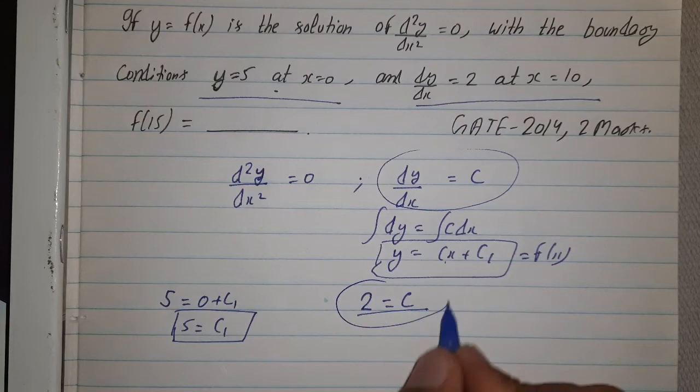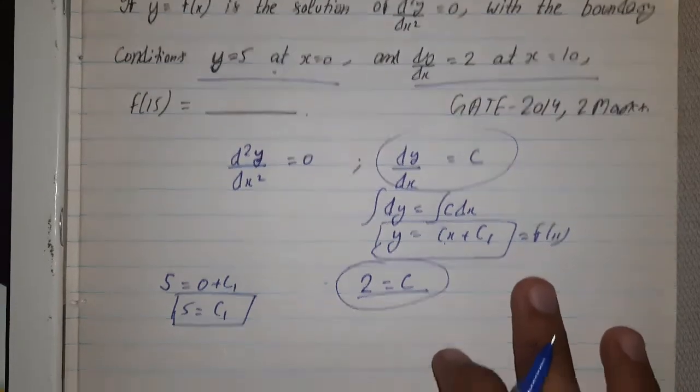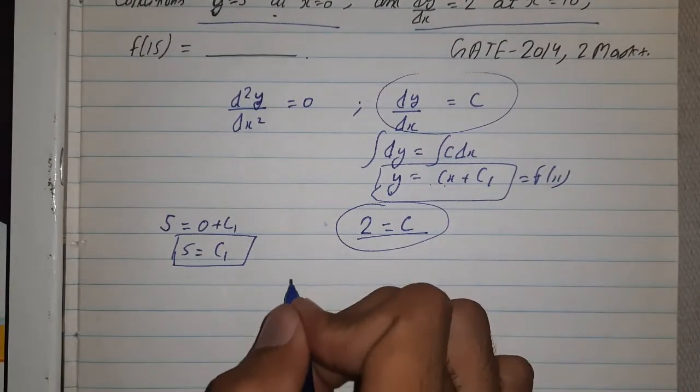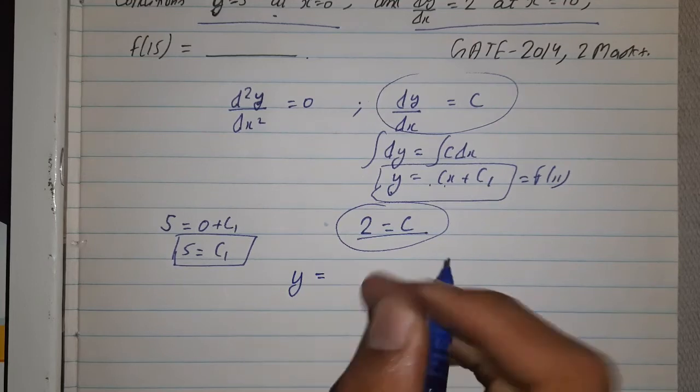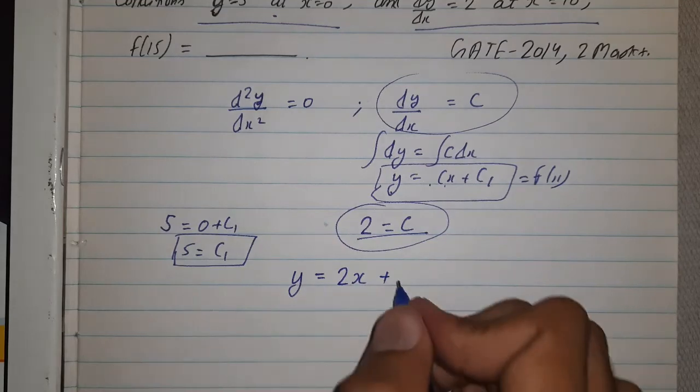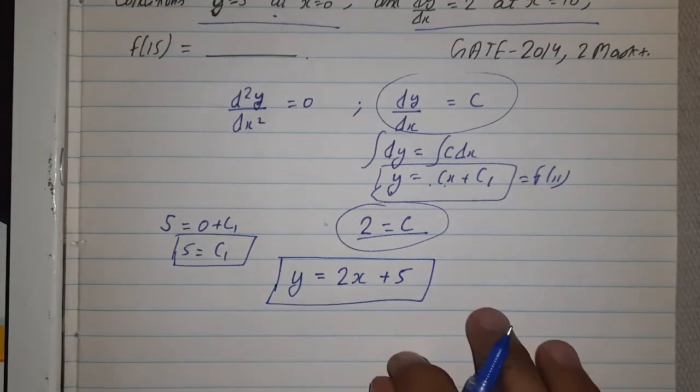So we got both the values of constants. Our c1 is 5, c is 2. We put in main equation. Our main equation was y = cx + c1, so we are left with y = 2x plus 5. So this is our solution. Now we have to find the value of f(15).